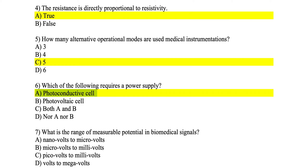Number 7: which is the range of measurable potential in a biomedical signal? In medical signals, one of the challenges is that they are small in value. The answer is between microvolts and millivolts, and that is why we need operational amplifiers to magnify the signals. So number 7 is B.